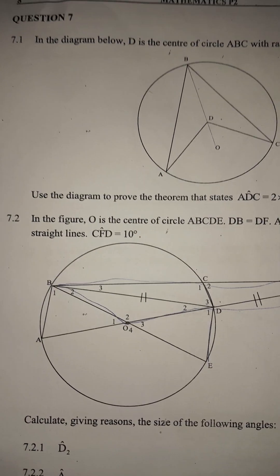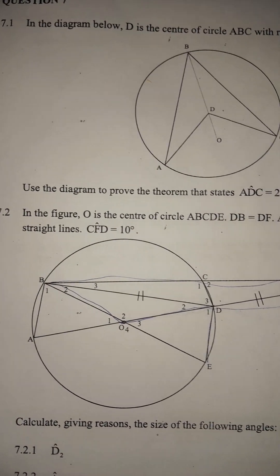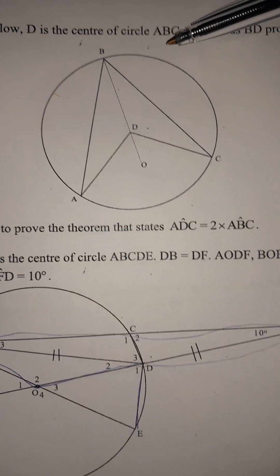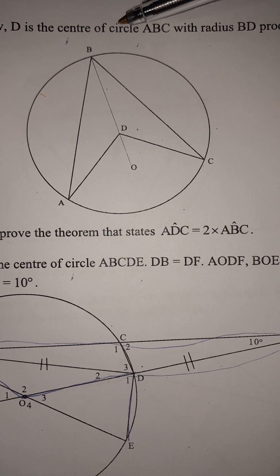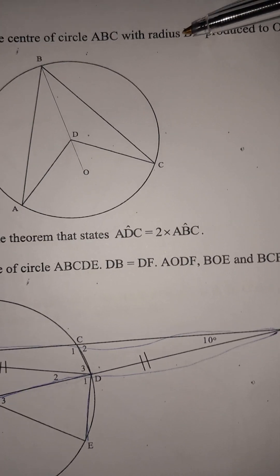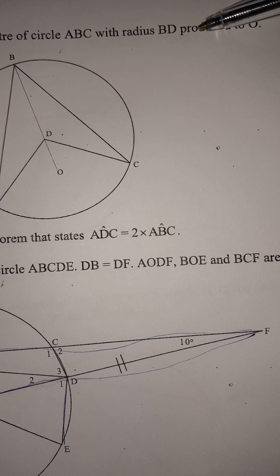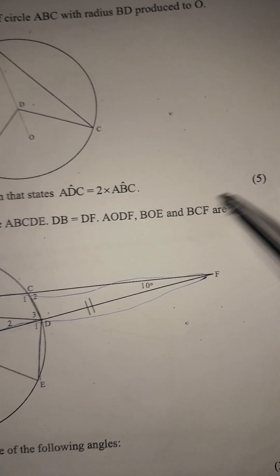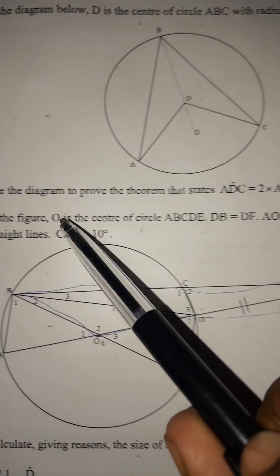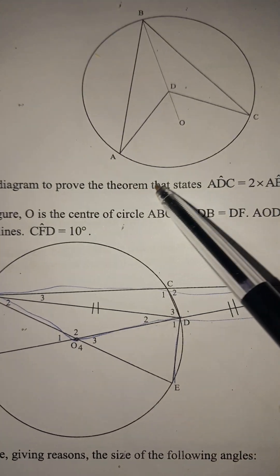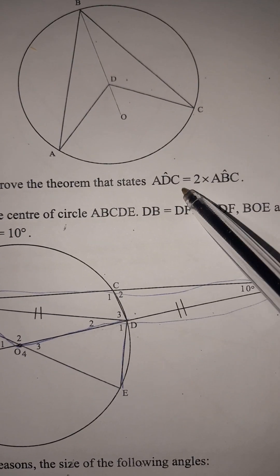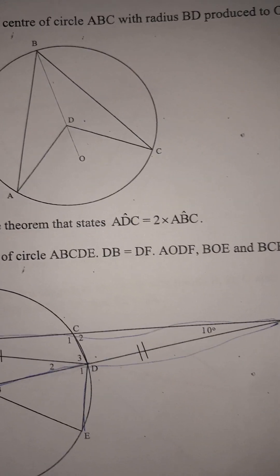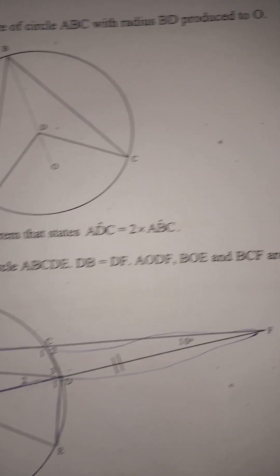Let's start with question 7.1 — it's a proof worth five marks. In the diagram, D is the center of circle ABC, with radius BD produced to A. We need to prove the theorem which states that angle ADC is twice angle ABC.